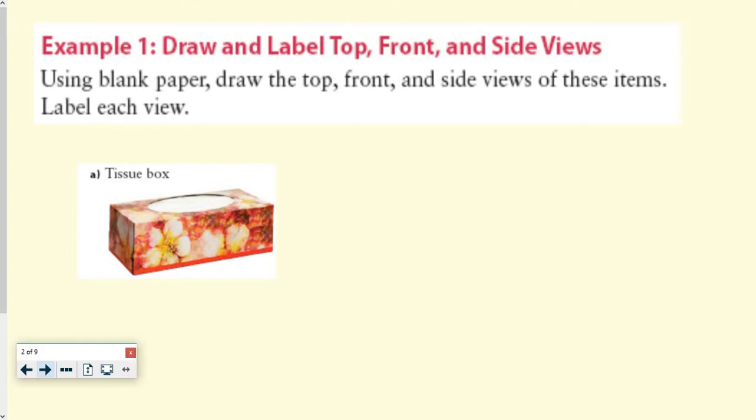So example one, we need to draw and label top, front, and side views using blank paper, draw on top, front, and side view of these. The top view of this would look like this, and there would be the hole where the Kleenex comes through. So that would be the top view of this.